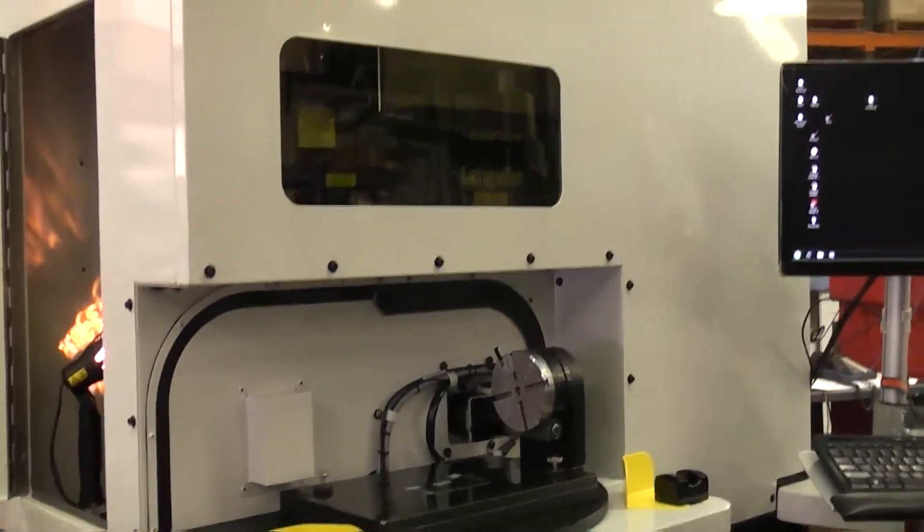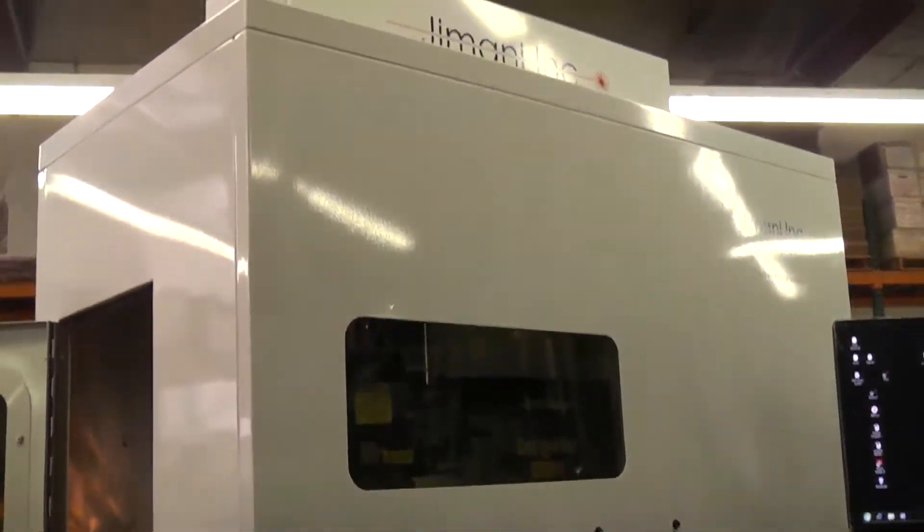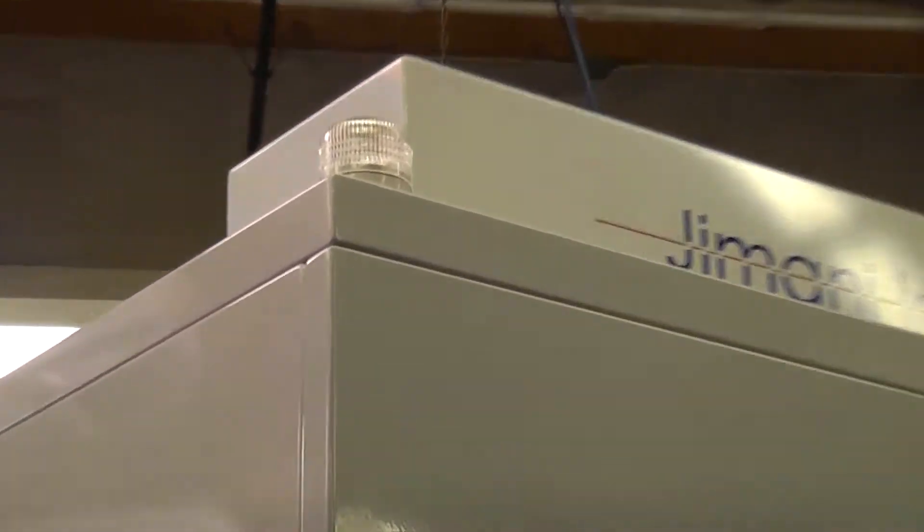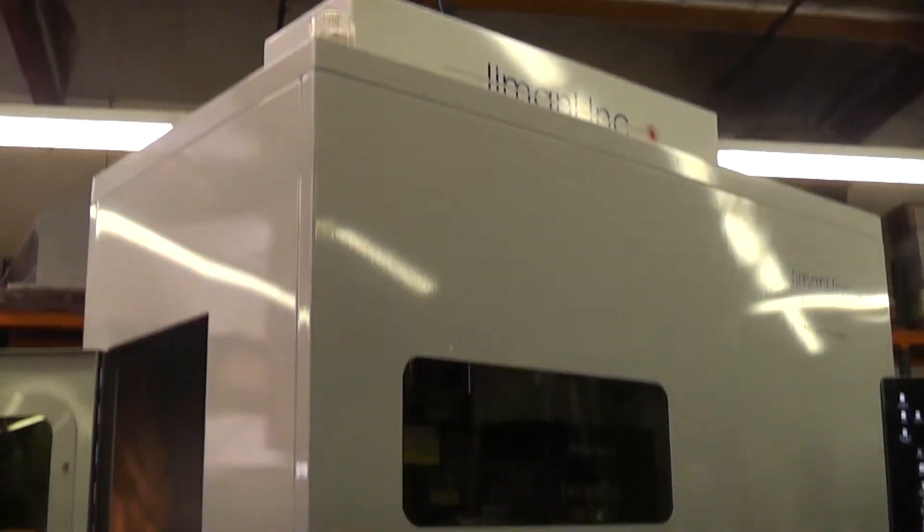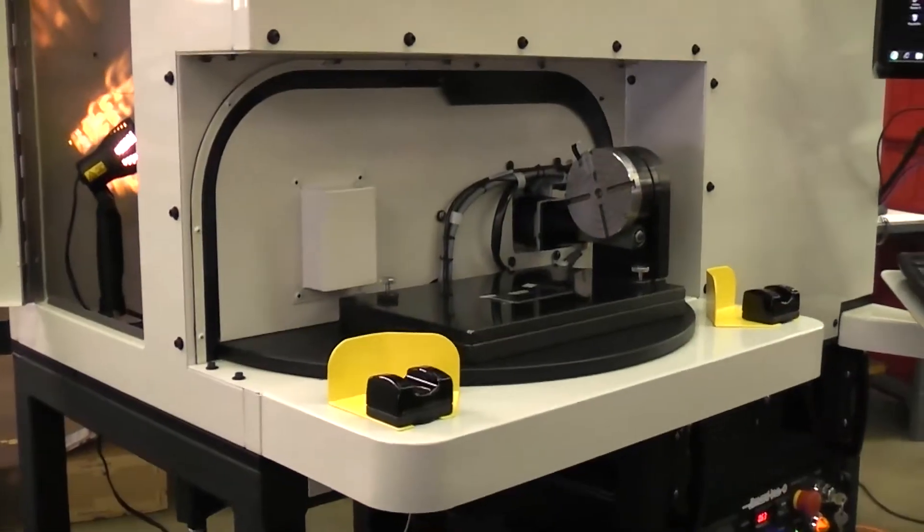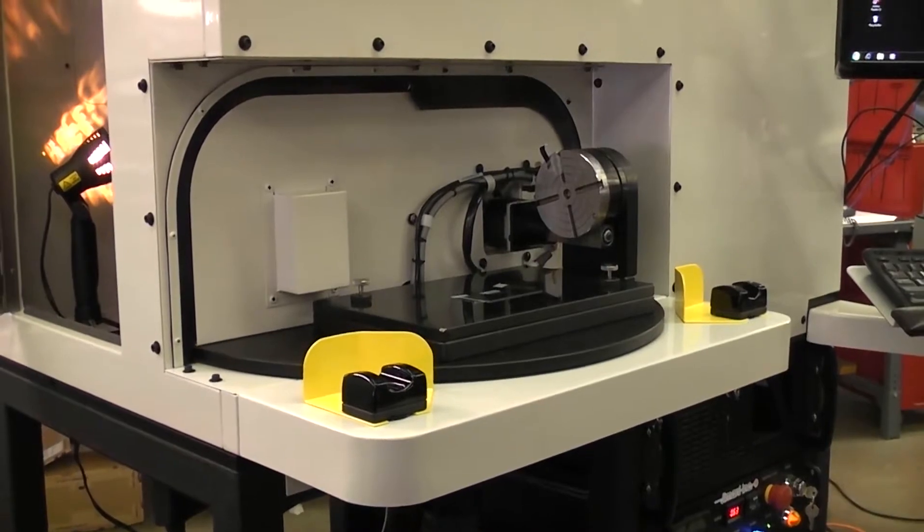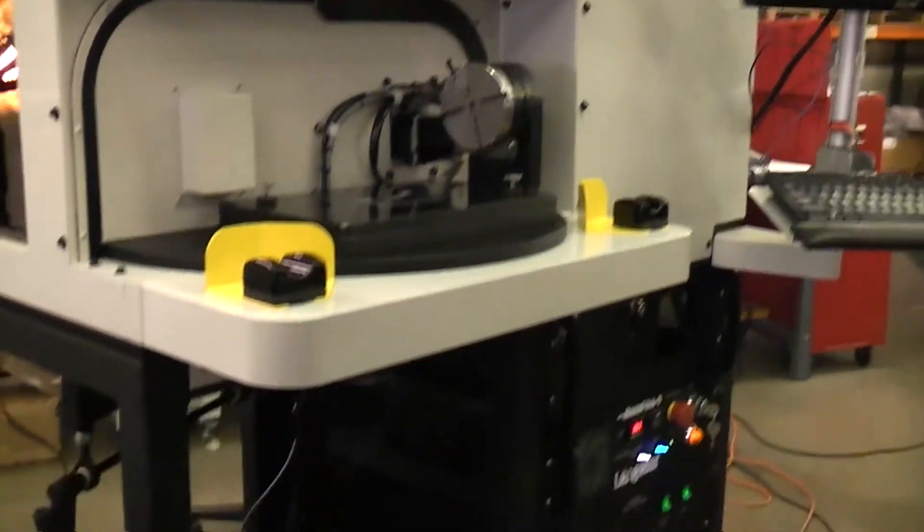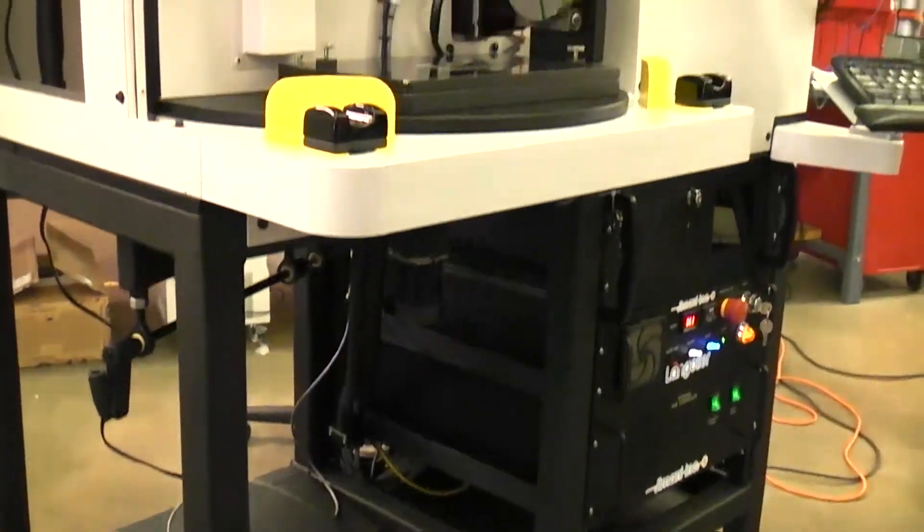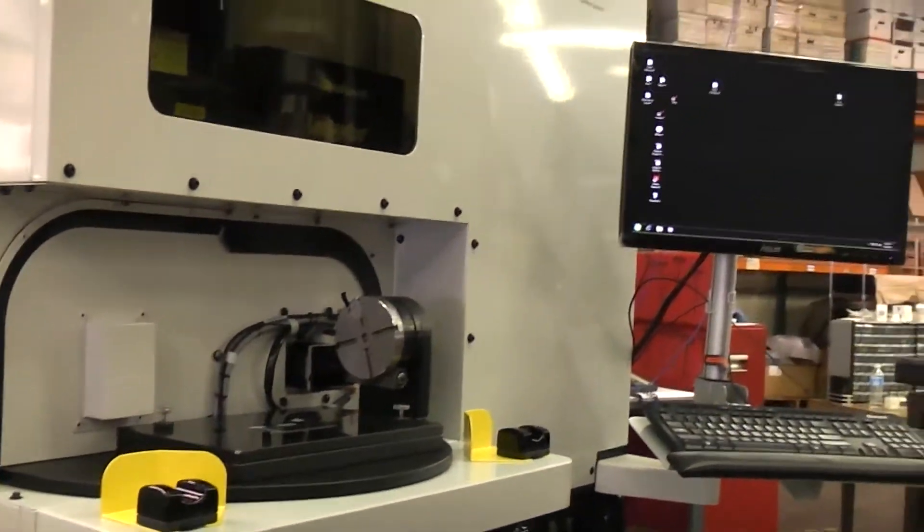One fixture is for loading parts while the other fixture is in the marking process. Each fixture has a shearline rotary indexer on it, and that fixture can rotate 180 degrees to present the front and back side of the part for marking.